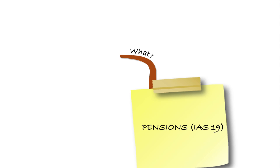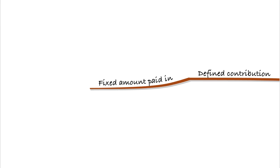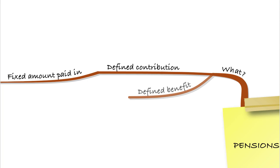So what are we talking about with pensions? There are two types you need to be aware of. First of all, a defined contribution scheme. This is where a fixed amount is paid in by both the business and the employee. They pay an amount into the pension and then what's left at the end of the term is what's paid out. So there's no liability created by the business — they simply have whatever's paid in, and the person then takes that out at the end.